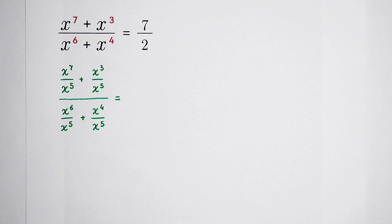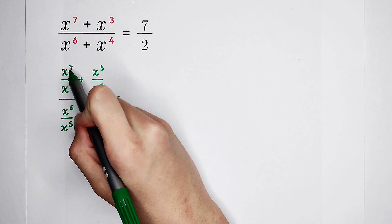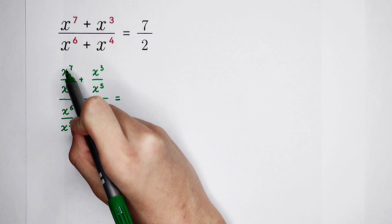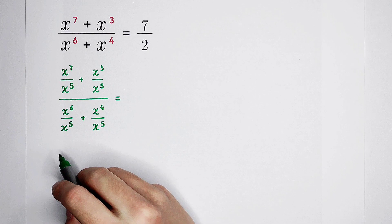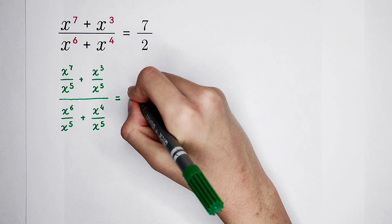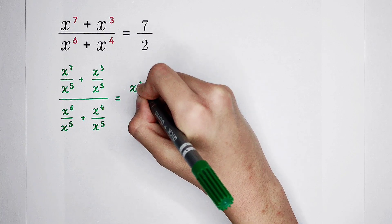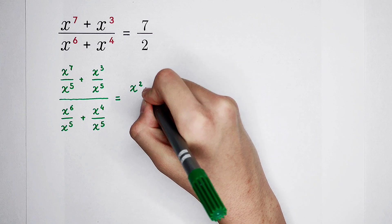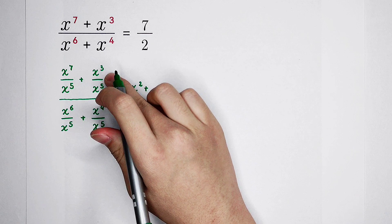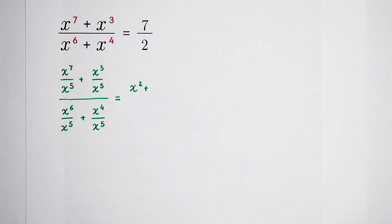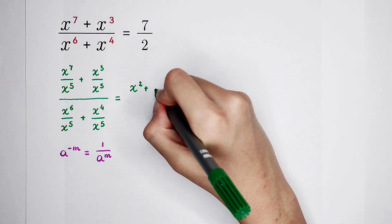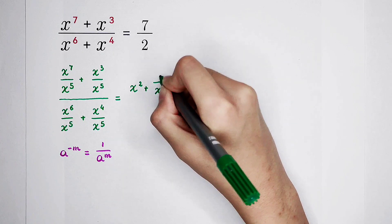We should use the formula: a to the power of m divided by a to the power of n equals a to the power of m minus n. So x to the power of 7 divided by x to the power of 5 is x to the power of 7 minus 5, that is x squared. Then plus x cubed divided by x to the power of 5, which is x to the power of 3 minus 5 — that is x to the power of negative 2. And x to the power of negative 2, using the rule a to the power of negative m equals 1 divided by a to the power of m, is 1 divided by x squared.